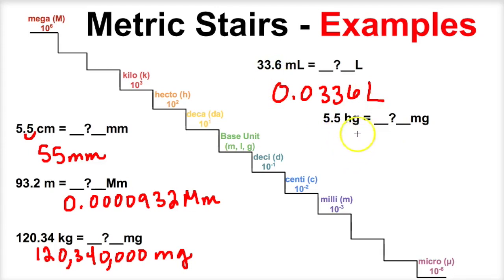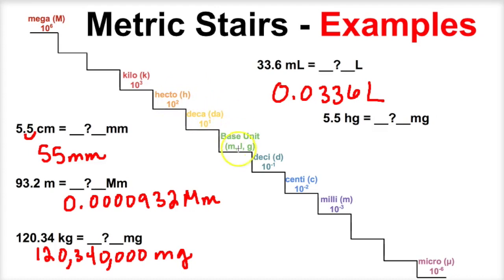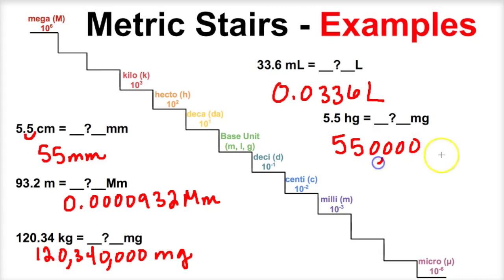Let's look at this last one. We have five and a half hectograms — hecto is right here — and we want to figure out how many milligrams this is. Milli is right here. So to go from hecto down to milli, we're going to have to take one, two, three, four, five steps. So this decimal is going to have to be moved five times to the right. And if we move this decimal to the right five times, we will end up with 550,000 milligrams.